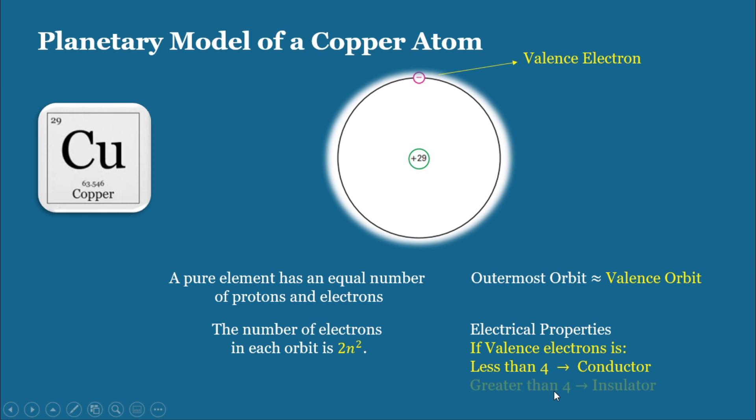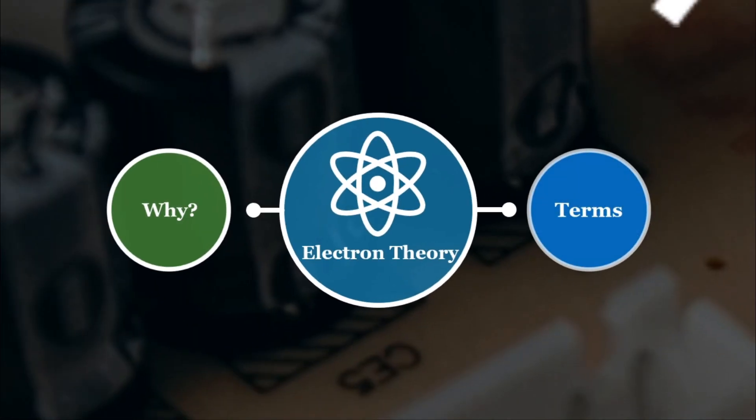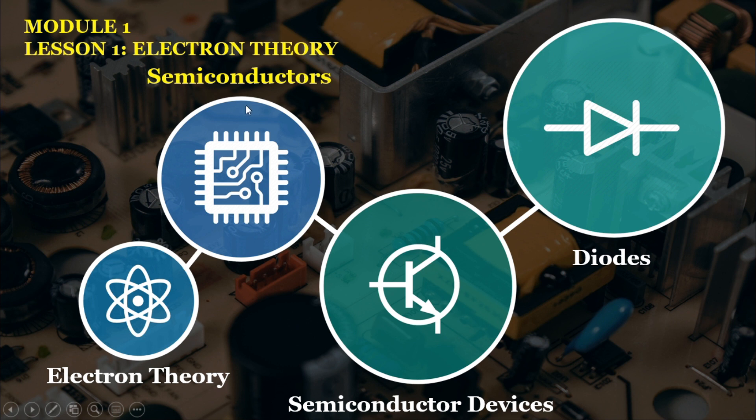On the other hand, if the number of valence electrons is greater than 4, that atom is considered an insulator. The best insulators have 8 valence electrons. For the purposes of electronics, if the number of valence electrons is equal to 4, then that atom is a semiconductor, which is our next lesson.